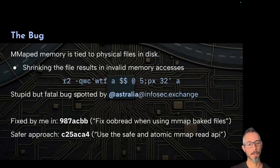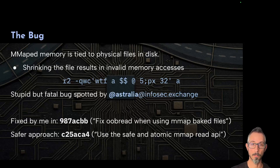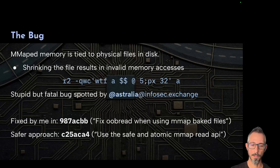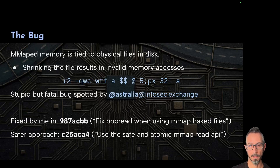We are using R2 and passing the flags: minus Q means it will be quitting after running the command; minus W opens the file in write mode; minus C takes a command as an argument. The file is named A, and the command we run is WTFA$$ at 5, and then we print 32 bytes. The problem is we are reading a file, modifying it, and then seeking and showing it at the same time. If you change the contents of a file and write less data, it truncates the file to a shorter version, and printing bytes after that means accessing memory outside the boundaries of the original mmap.